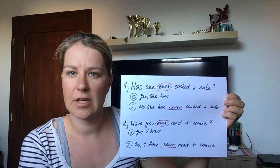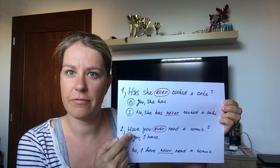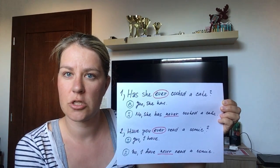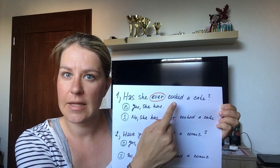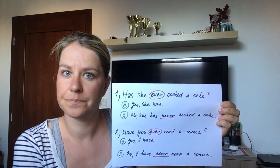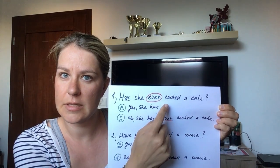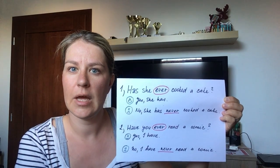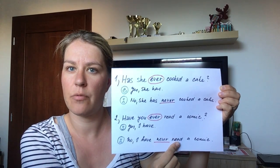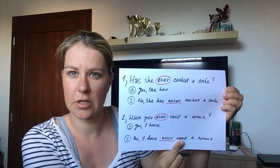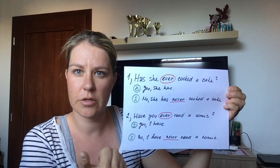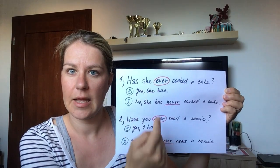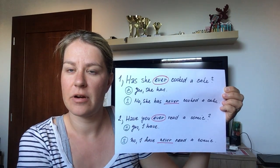Všimněte si, že v těch větách si hlídáme 'have' nebo 'has'. Tady 'has', protože třetí osoba — she. Stále je tam třetí tvar slovesa. Tady je sloveso pravidelné — 'cooked', má tam koncovku -ed. Tady je sloveso nepravidelné — 'read', třetí tvar slovíčka od 'read' je read–read–read. A máme tady 'ever' — někdy a 'never' — nikdy.